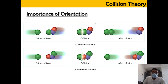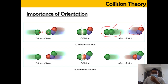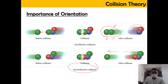Orientation is very important because incorrect orientation will not form a product. As shown here, at the upper layer, collisions happen in the correct way — when the green particle collides with the green particle, a correct product can be formed. But if the orientation is not correct, where the green color collides with the red color, the particles will bounce back and no product is formed. This is known as an ineffective collision. Both requirements — sufficient activation energy and correct orientation — must be fulfilled.